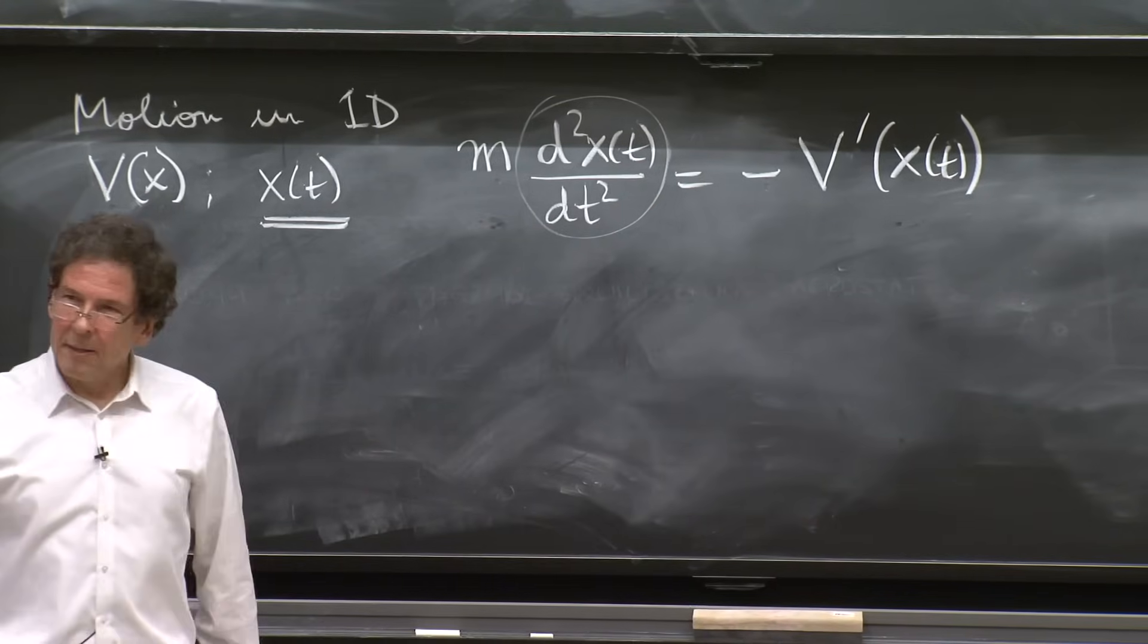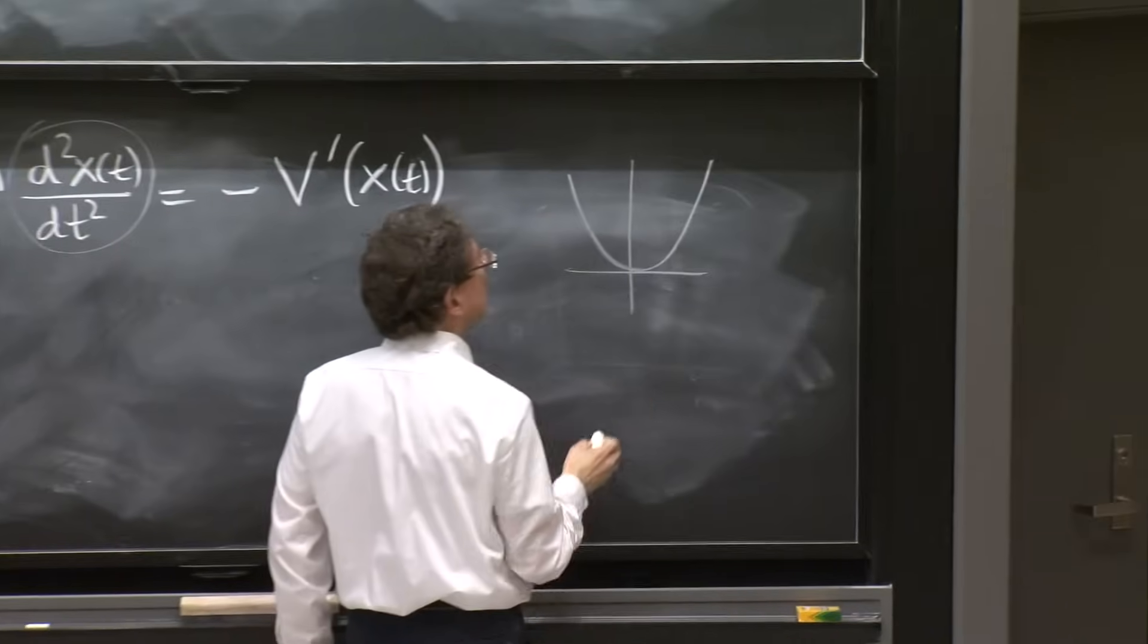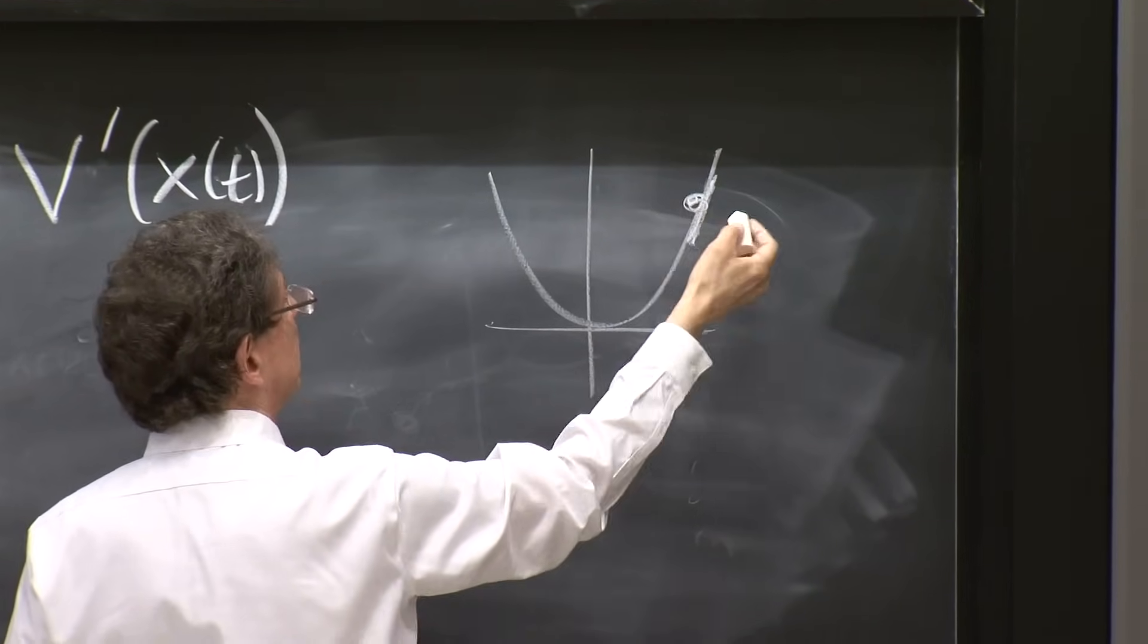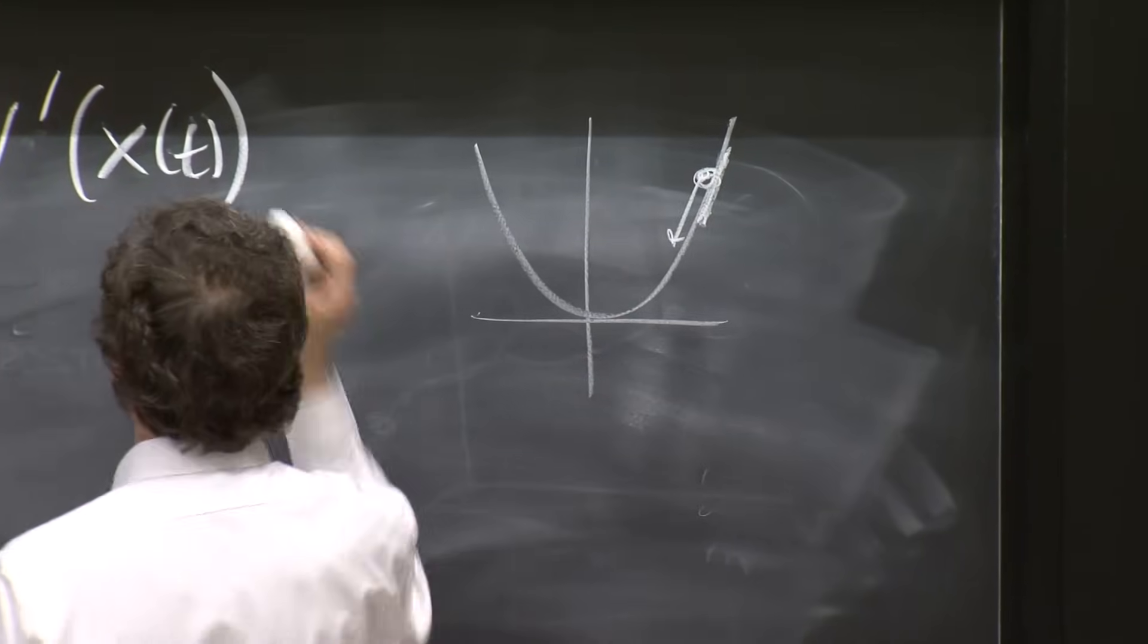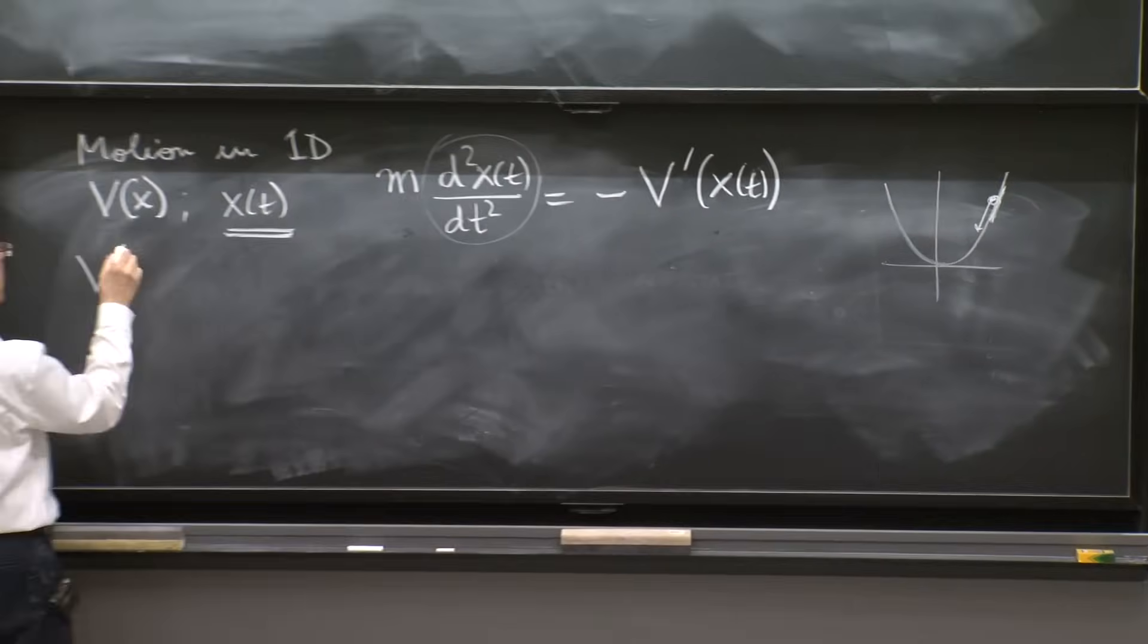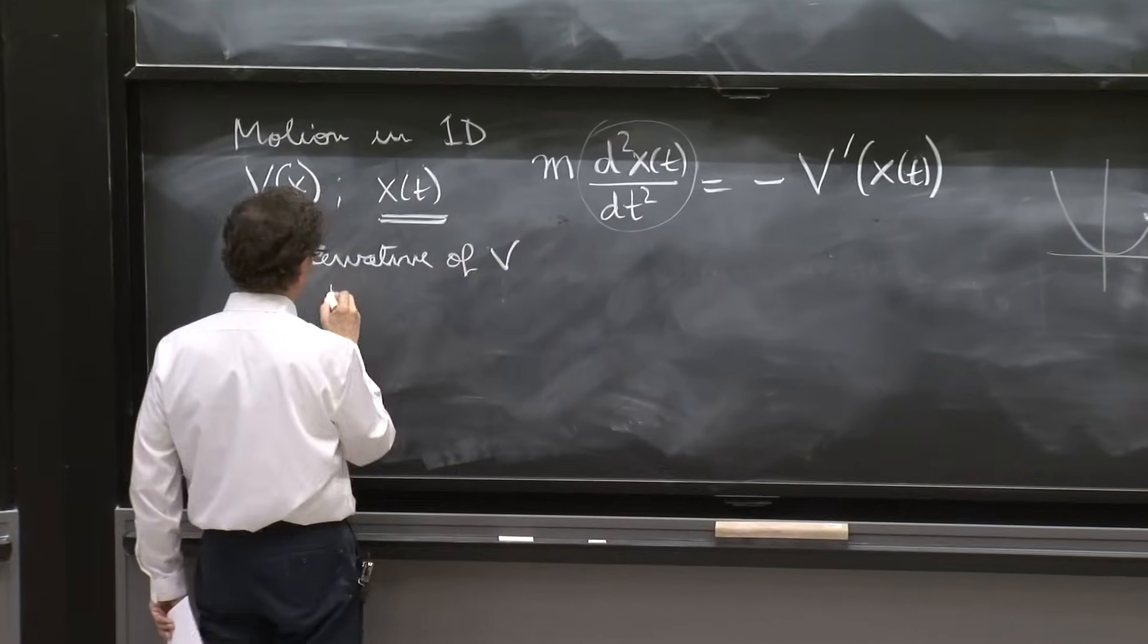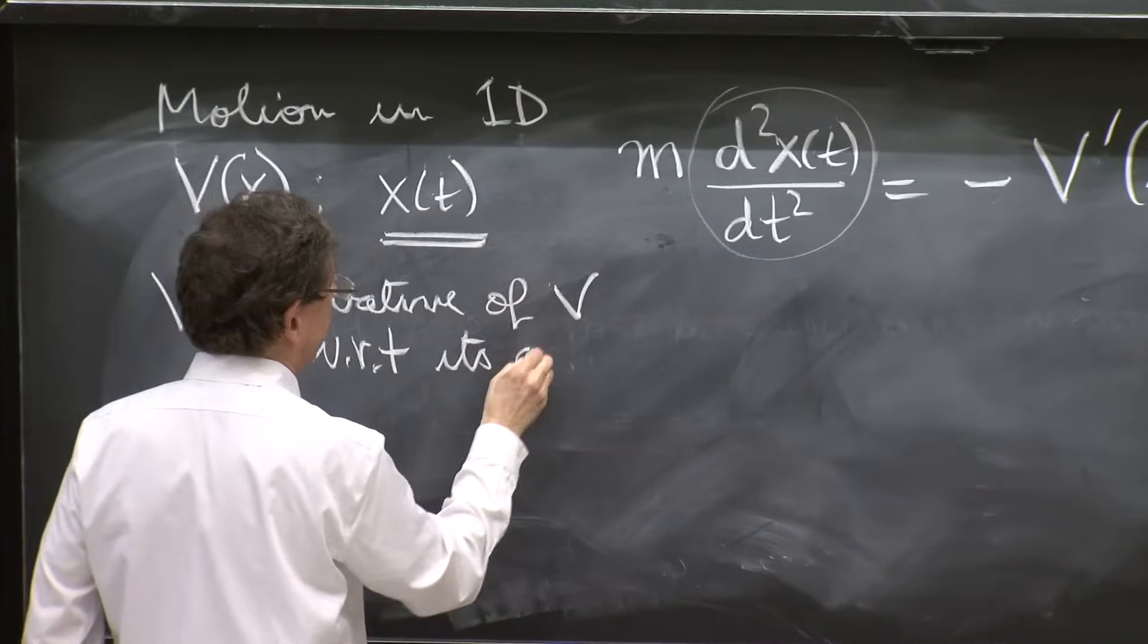Now, derivatives of potentials, if you think of a potential, the derivative of the potential is here positive. And if you have a mass here, it tends to go to the left. So the force is on the left. So it's minus. So v prime is the derivative of v with respect to its argument.